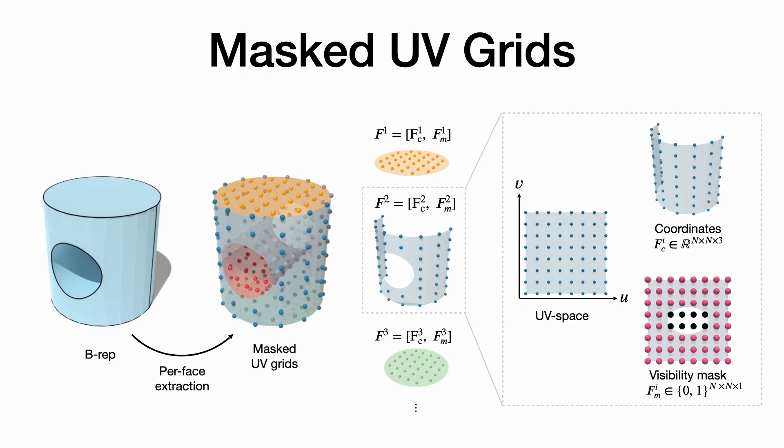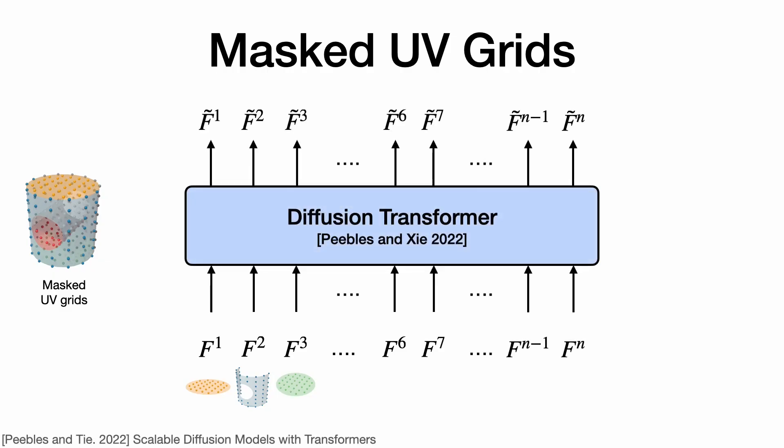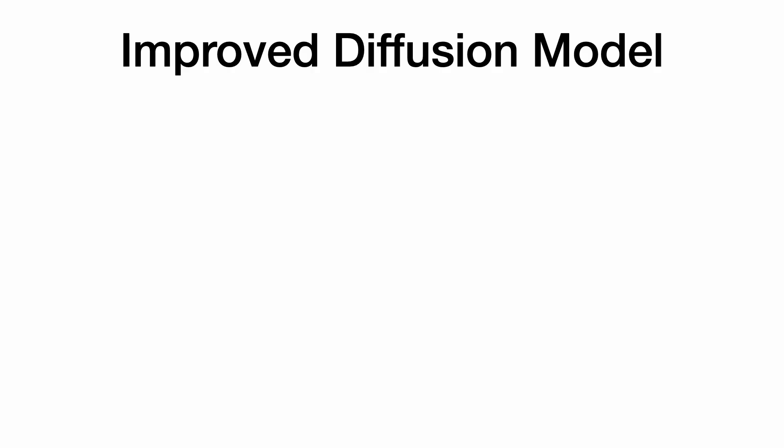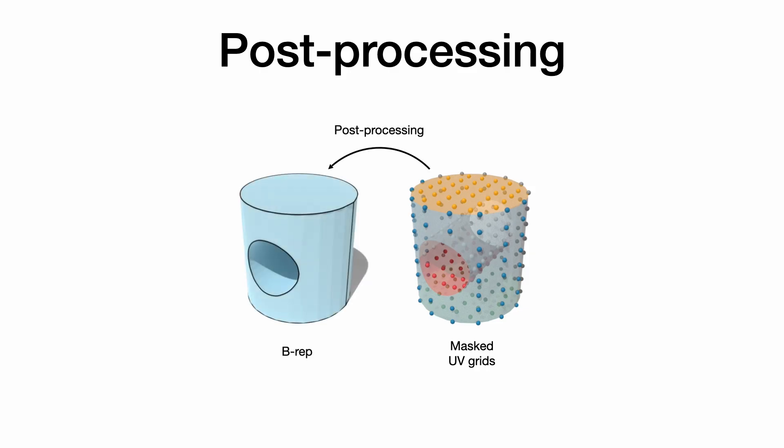By representing each face as tokens, masked UV grids are directly compatible with diffusion transformers. In practice, we introduce a modified noise schedule and an asynchronous denoising strategy to more effectively learn the underlying distribution. Given generated masked UV grids, we recover the final B-rep with a post-processing operation.